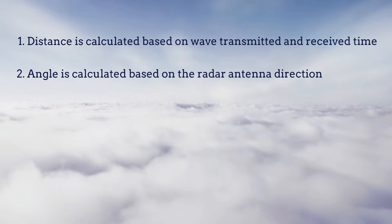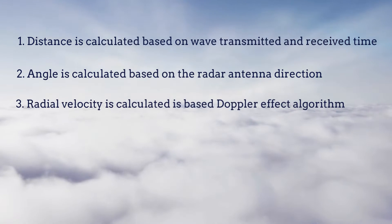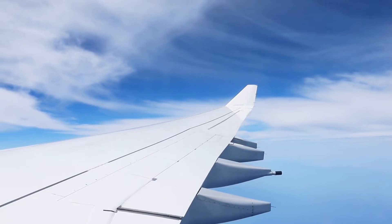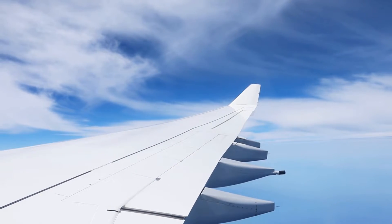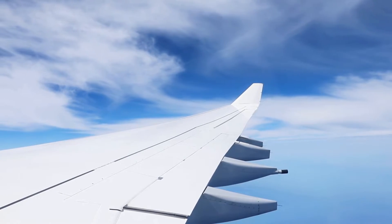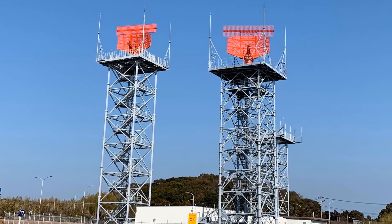The radial velocity is calculated based on the Doppler effect algorithm. These radars will detect any non-cooperative objects in the coverage area, including aircraft, and display them on the ATC monitor. Primary radar is capable of providing an accurate horizontal position to air traffic controllers. However, additional radars are required to identify the precise vertical position of aircraft.